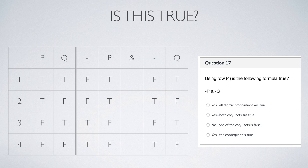We look at row four to determine whether this proposition is true. Both conjuncts are true, so yes, the conjunction is true. Looking at the options, we have three yeses and one no. 'All atomic propositions are true' is actually false because they're both false in row four, and even if it were true, that's not what makes a conjunction true. What makes a conjunction true is that both conjuncts are true — that's the correct answer.